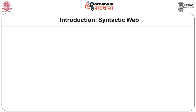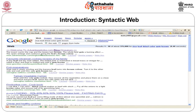Before we start discussing semantic web techniques and technologies, let us look at the current web that we use in day-to-day life. I am sure most of you are familiar with Google. We searched with keywords like 'rice leaf dried color gets brown' — my problem was to find a solution because my rice leaves were getting dried and their color was becoming brown. This is what we got as search results: 376,000 hits.